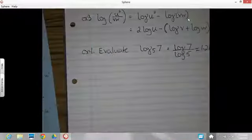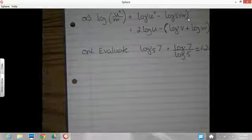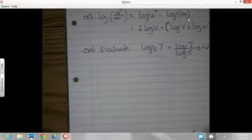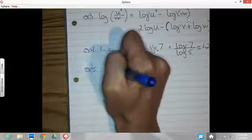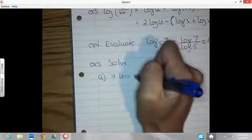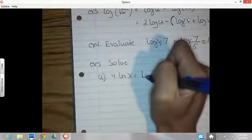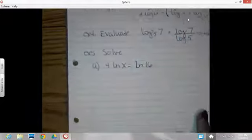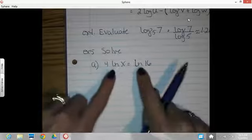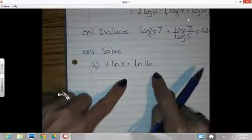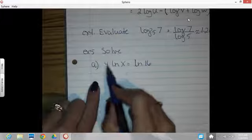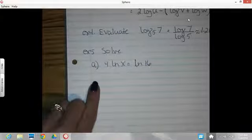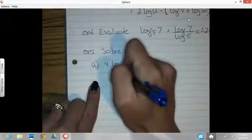All right. And the last set of examples are going to be solving log equations. Okay. First one. We've got four natural log of x equals natural log of 16. So what you want to do because you've got a natural log on both sides is get the natural log of something on each side. So you want to simplify this side here because it has that multiplier. So what I'm going to do is bring that four up as the exponent.